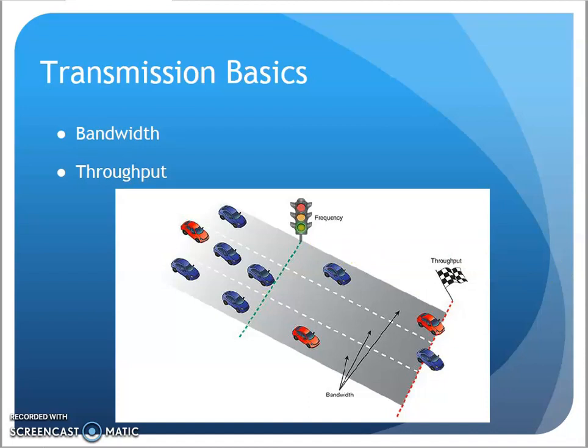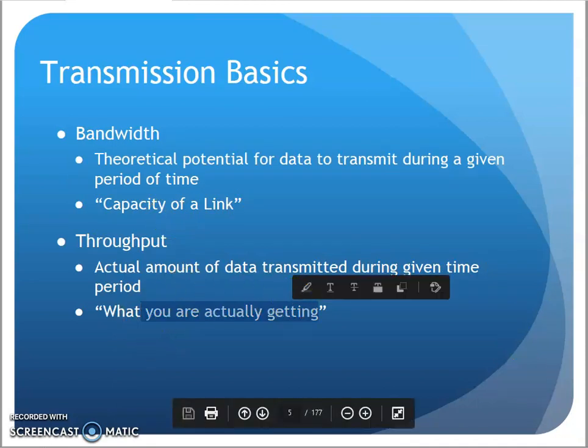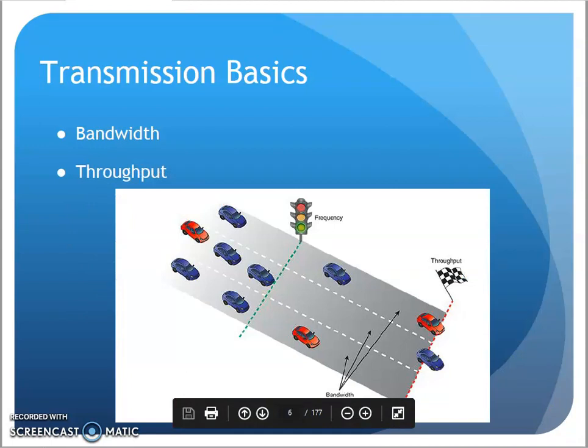That does matter when you're talking about moving data. Especially in the early days of wireless, you might be rated at 50 meg, but you're actually getting 10 meg through because of interference, noise, etc. So bandwidth is really a measure of what is the capacity, and throughput is really what you're actually getting through per time.